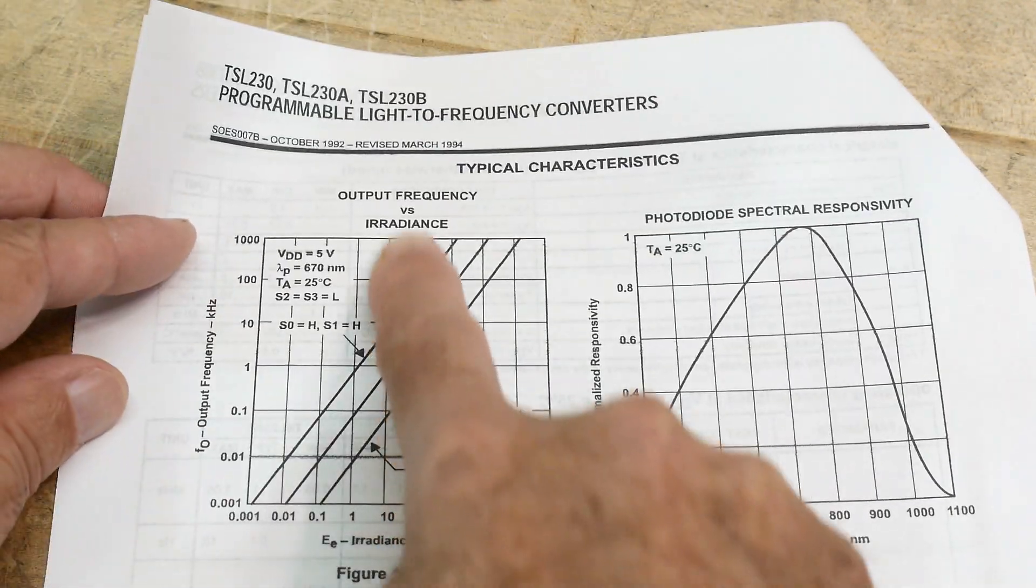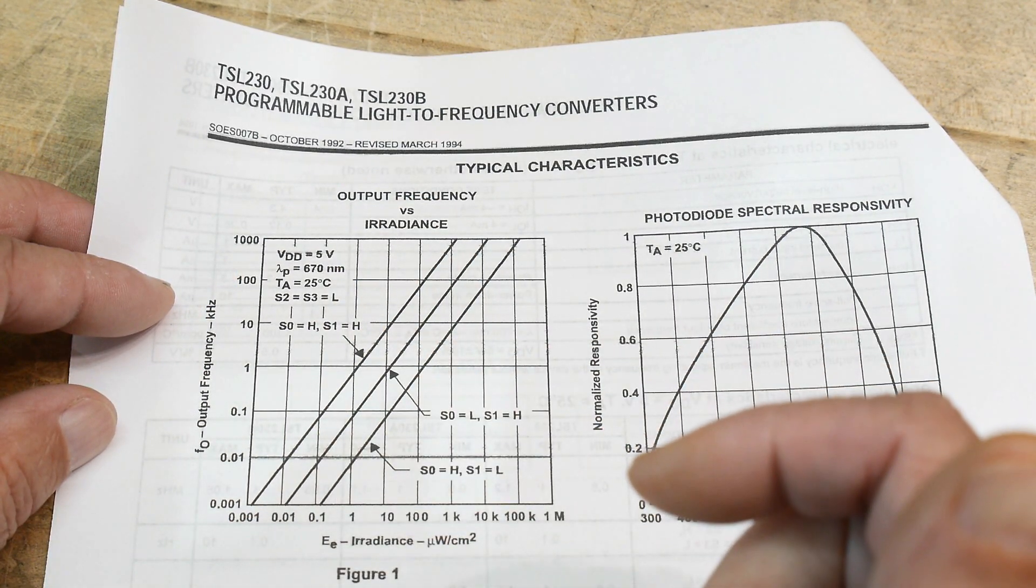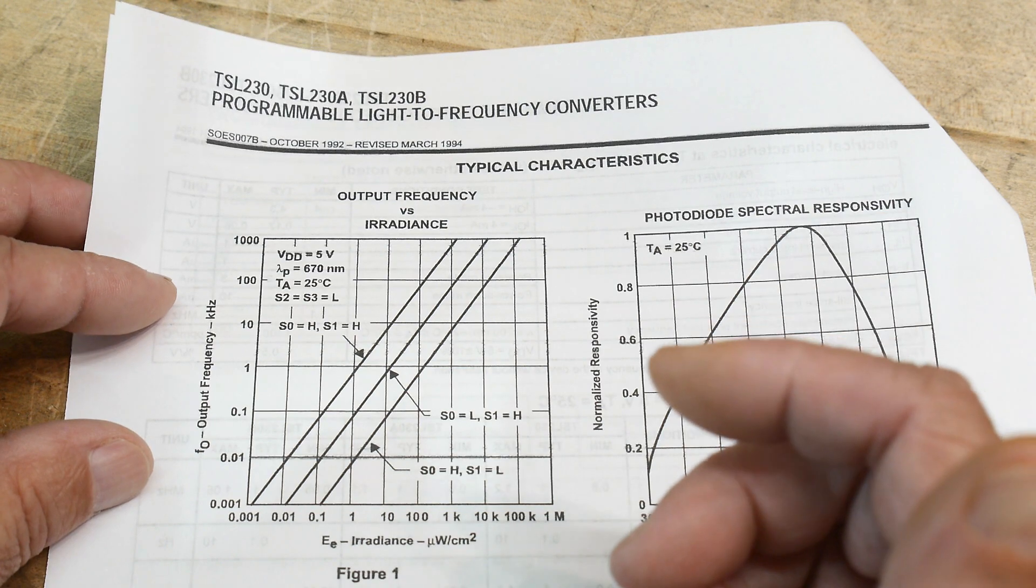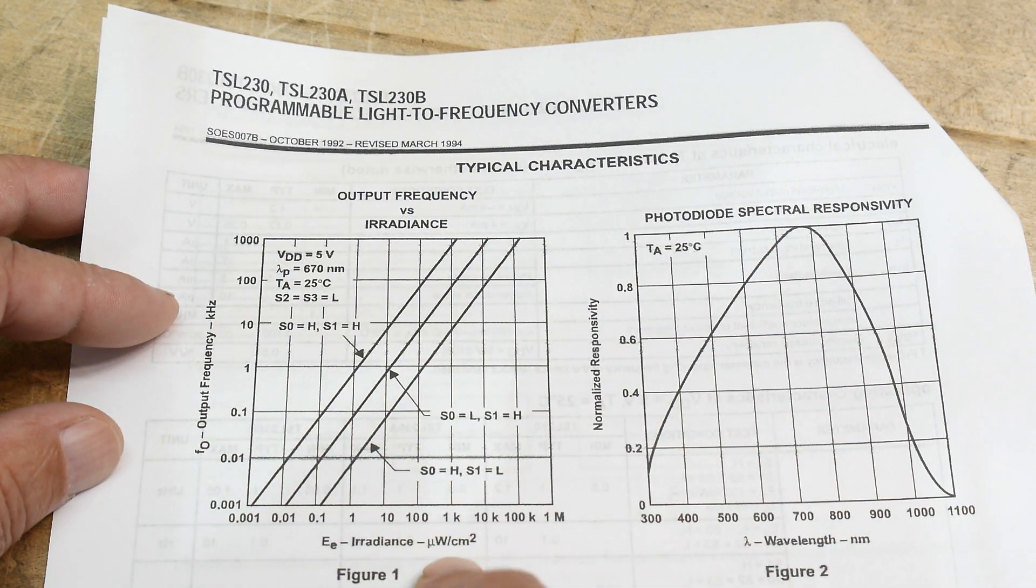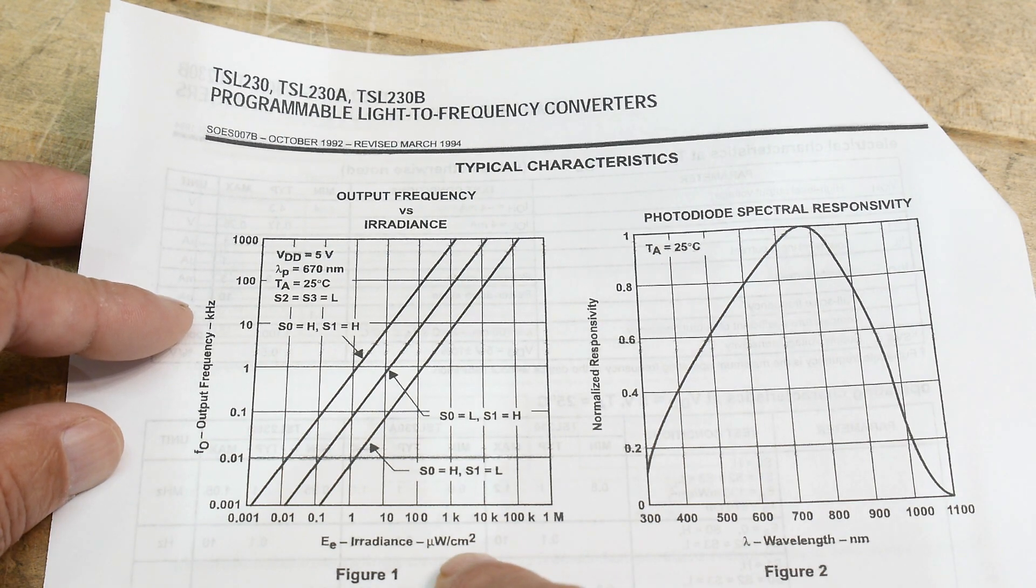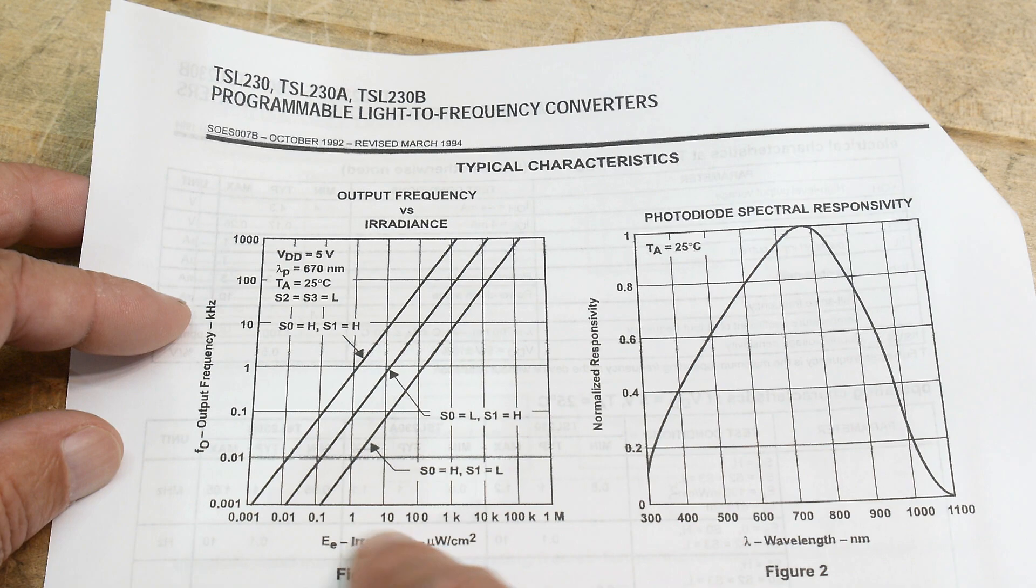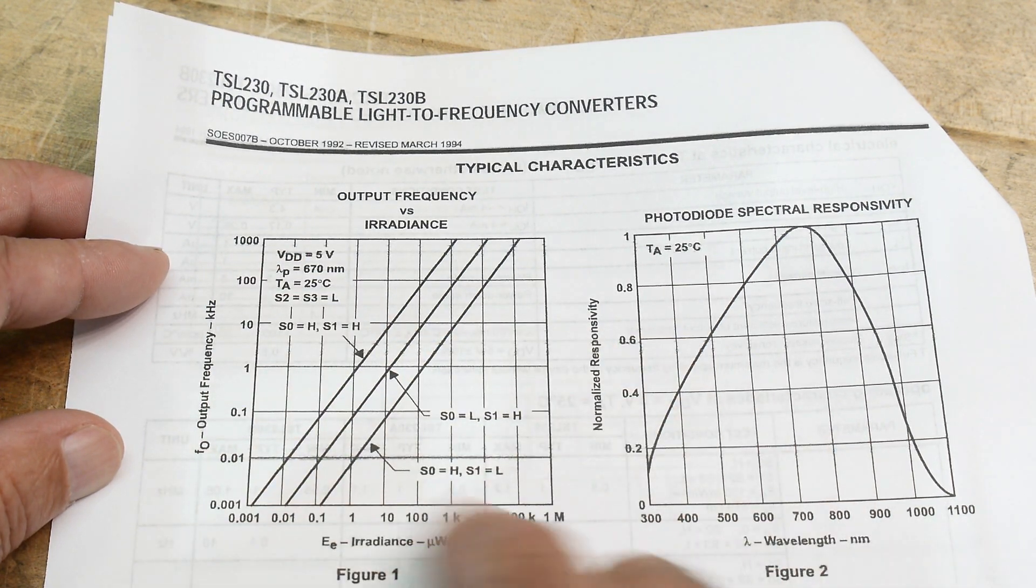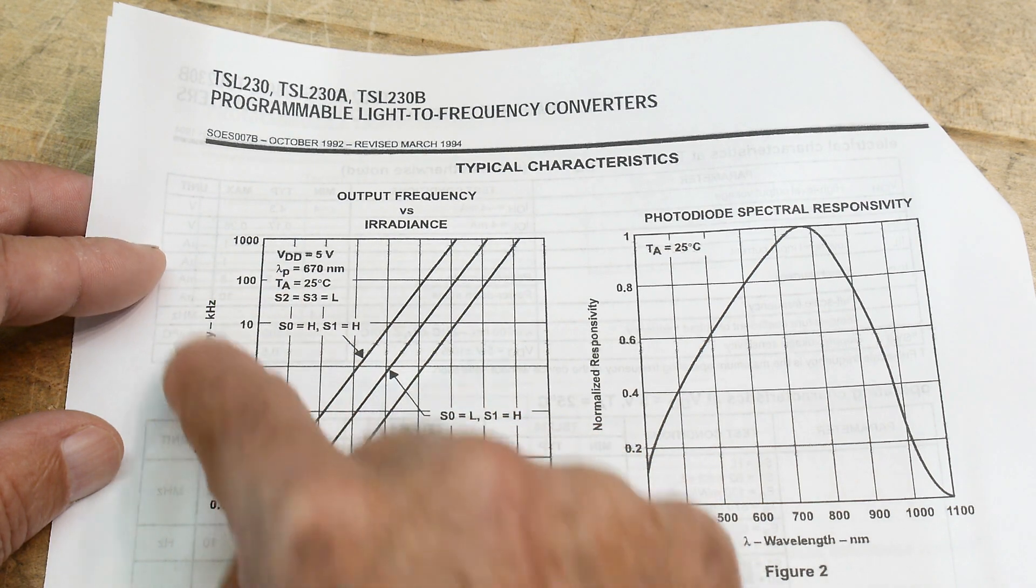Yeah, here's the output frequency versus radiance. Should be measured in probably watts. Let's see here, output frequency versus radiance, yeah microwatts per centimeter squared, irradiance, and the output in frequency. So here's the ranges that goes between 0.01 and 1000 kilohertz depending on what gain setting you have and things like that.